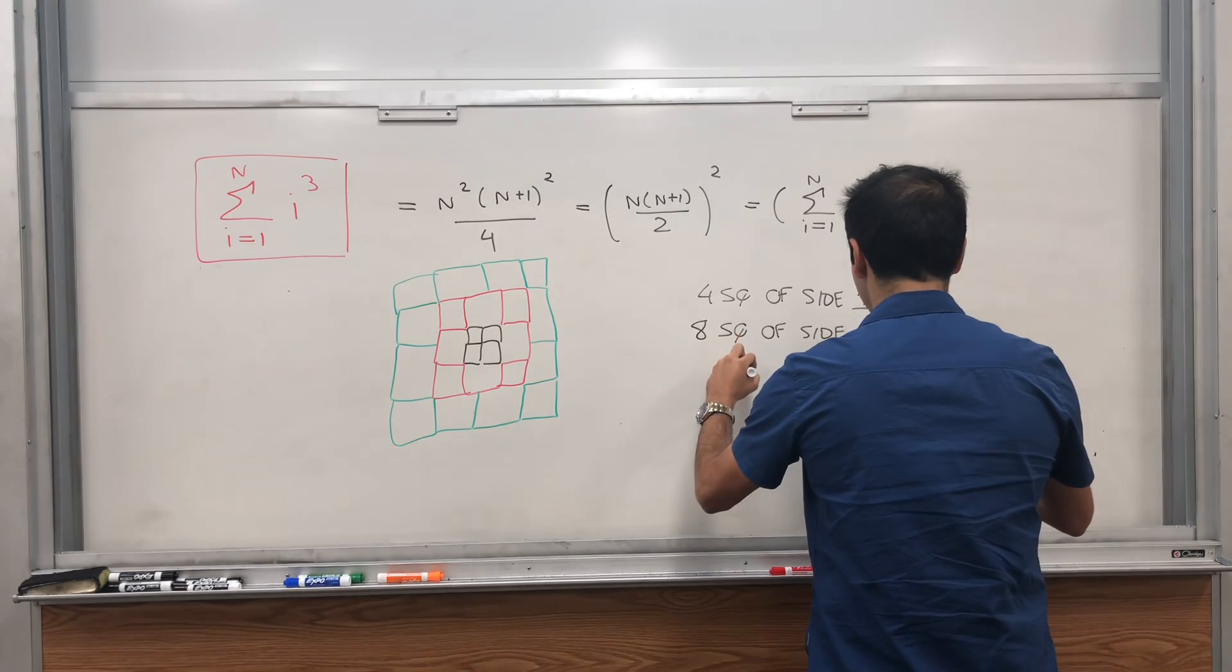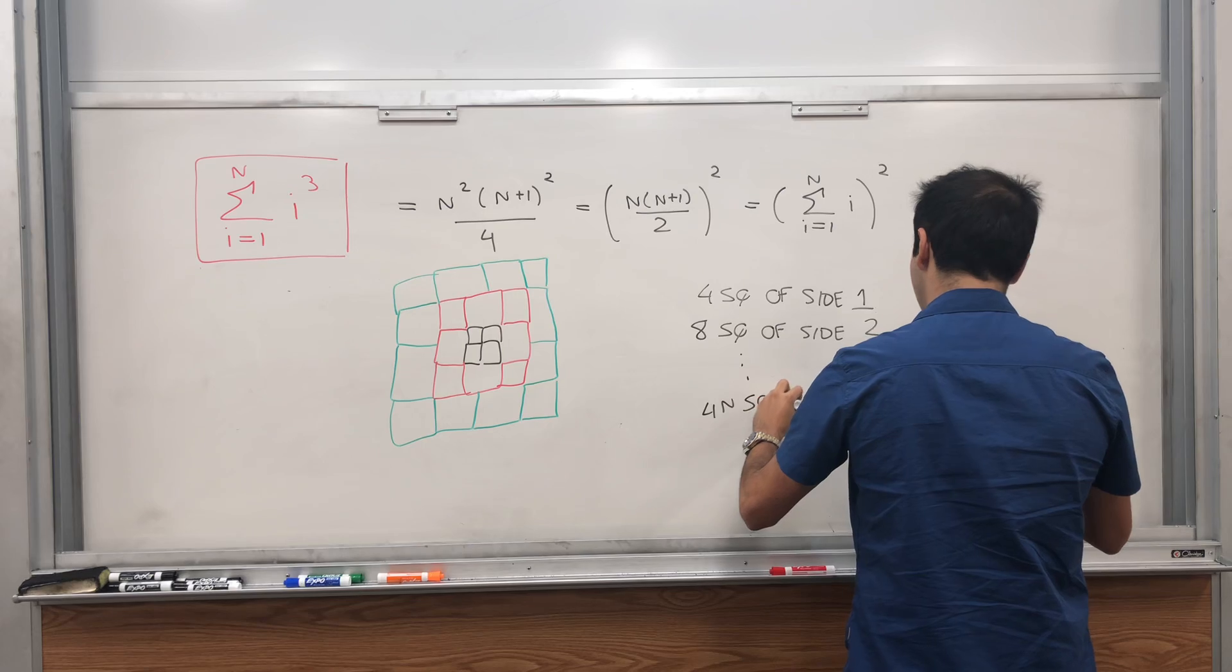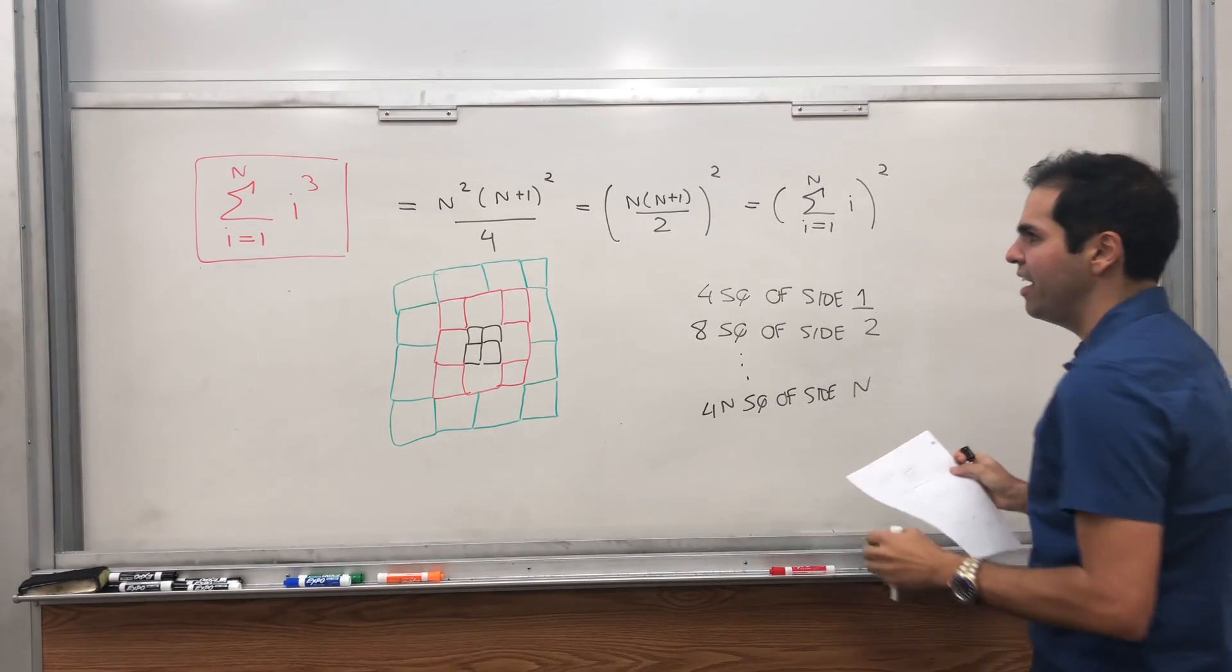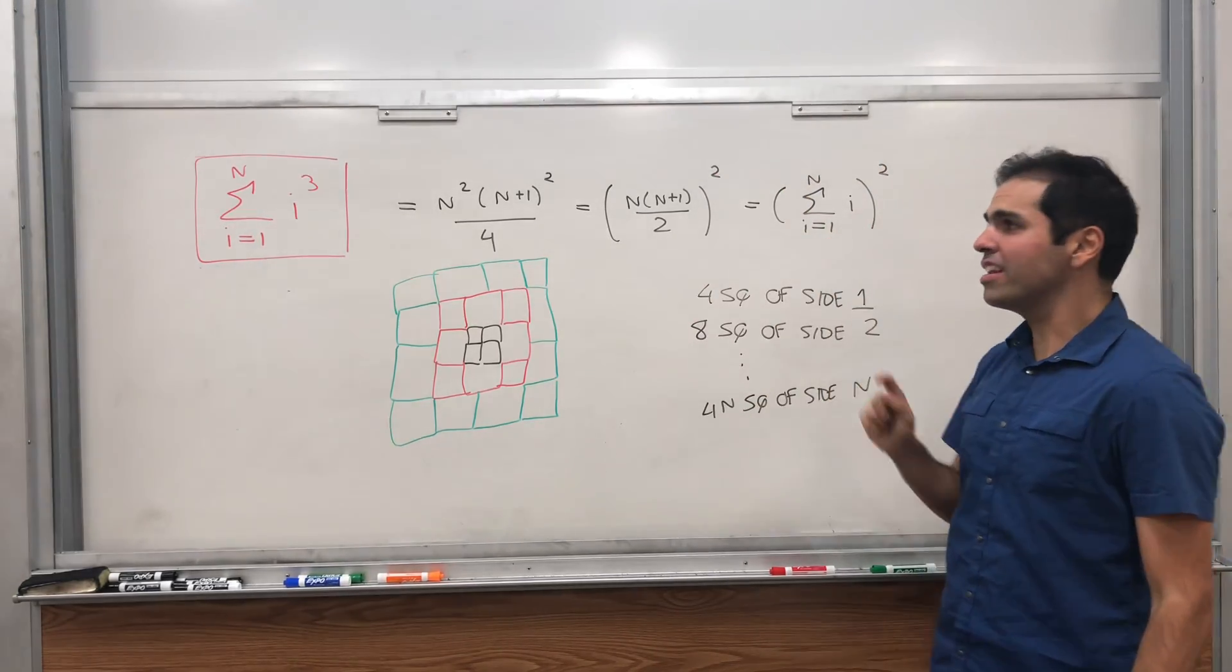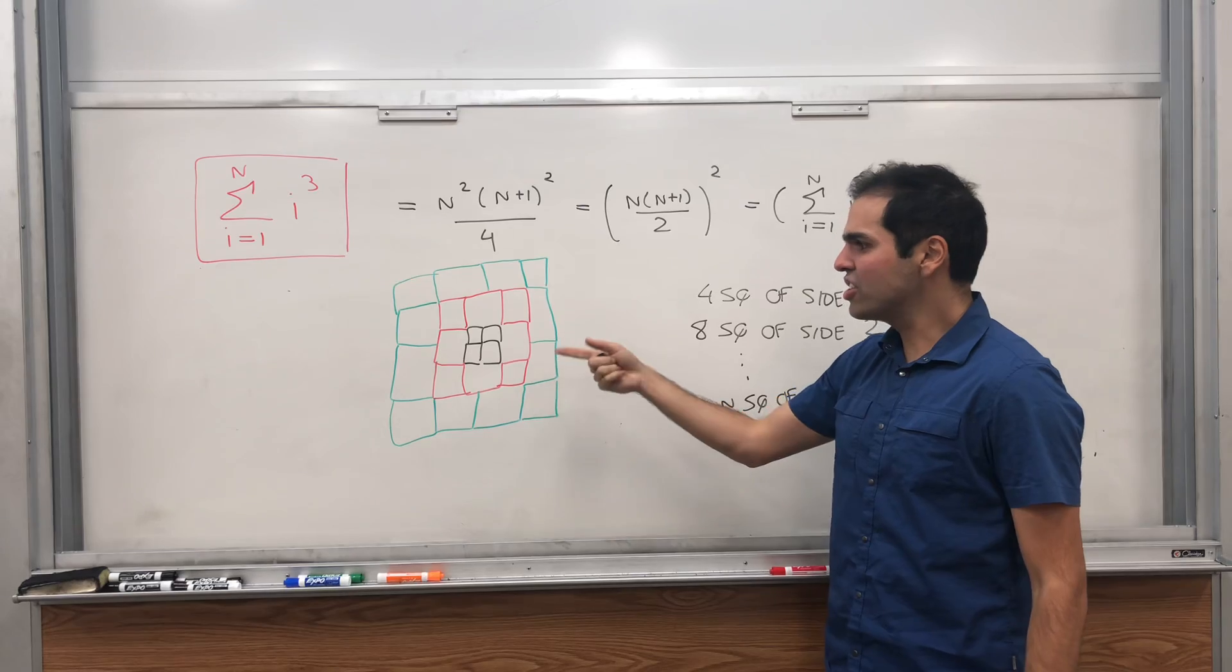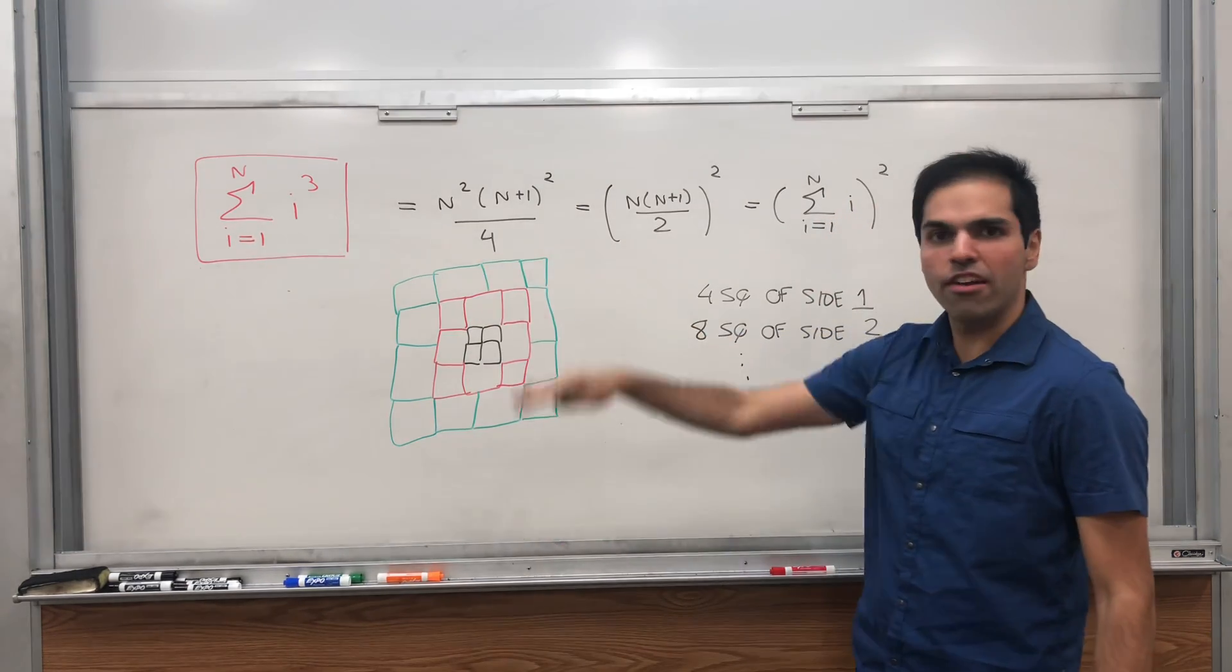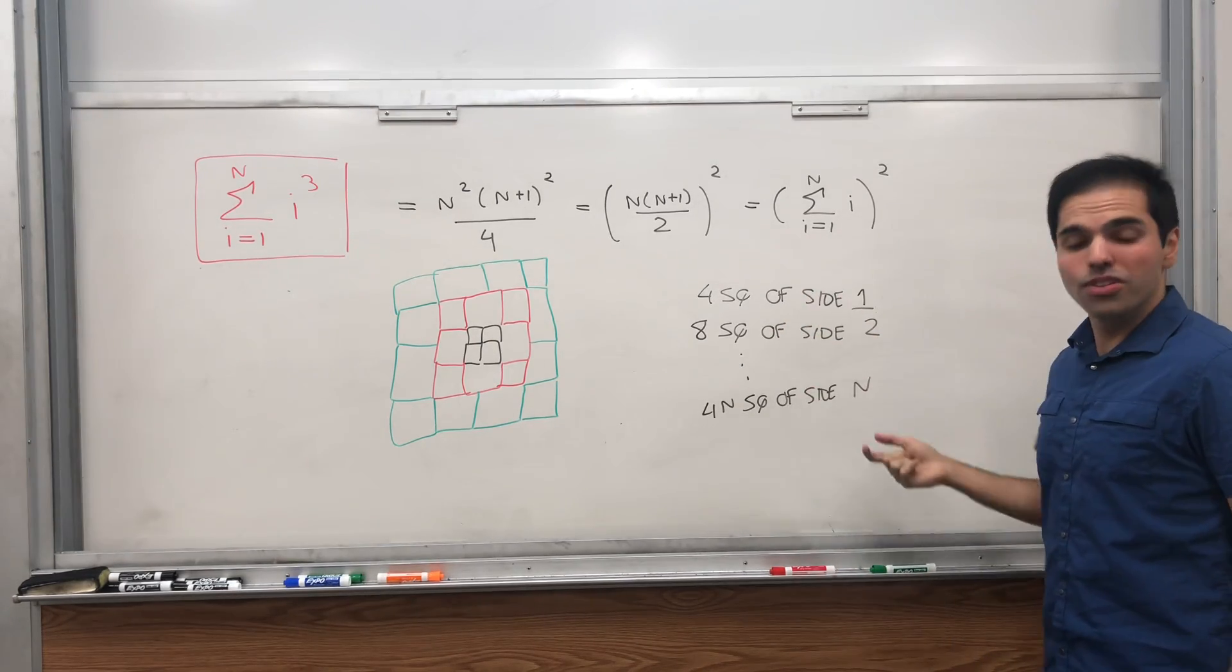And in general, what you have is 4n squares of side n. And calculating the sum of cubes and showing this identity actually just amounts to calculating the total area of this figure in two different ways.